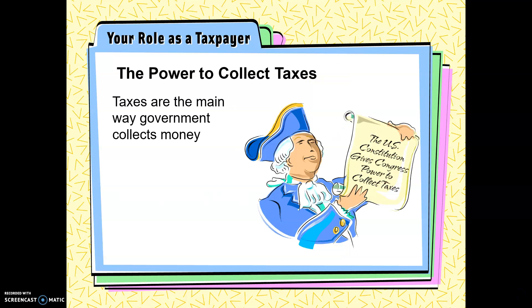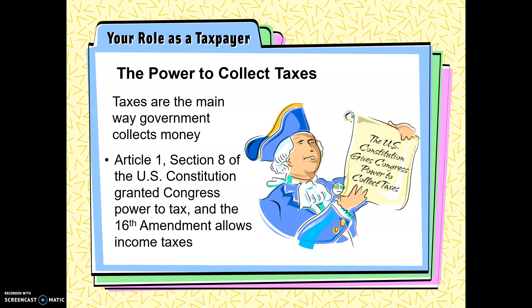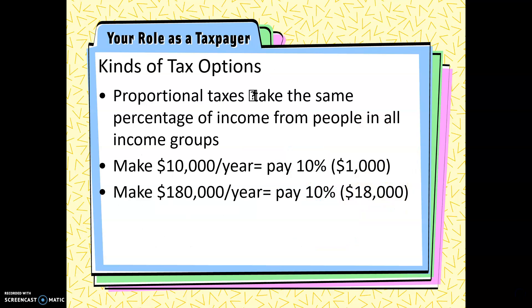Where does the power to tax come from? Some may have heard conspiracy theories that there's no power in the Constitution — that's nonsense. Article 1, Section 8 of the Constitution gives the federal government the power to tax, and the 16th Amendment allows for an income tax. Taxes at the local, state, and federal levels are perfectly legal.